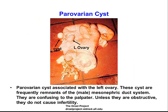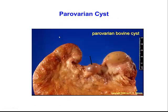Para-ovarian cysts are cyst-like structures found associated with the broad ligament, or close to the ovaries or uterine horns. These are remnants of the mesonephric (Wolffian) duct system. Sometimes they can be confused with ovaries, but if you carefully locate two separate ovaries and find these cysts as distinct structures, you can diagnose them as remnants. They don't usually affect fertility. You would feel the ovary and then feel a separate cyst-like structure alongside it.